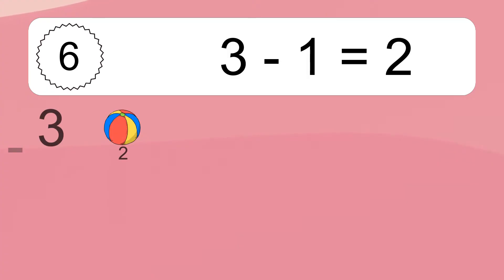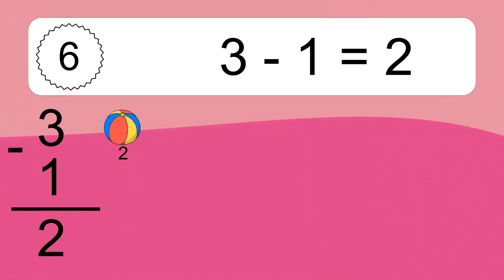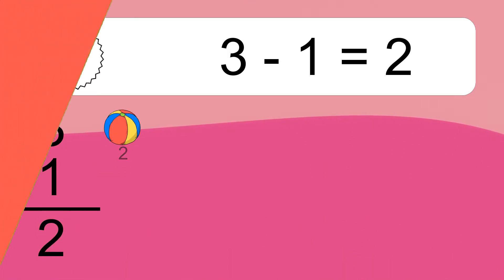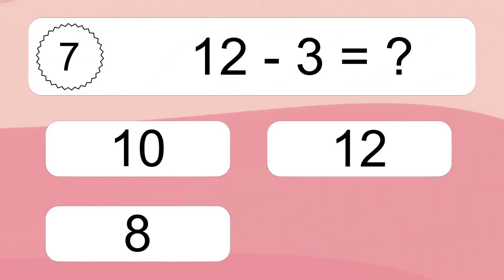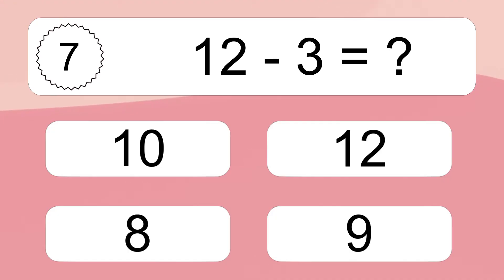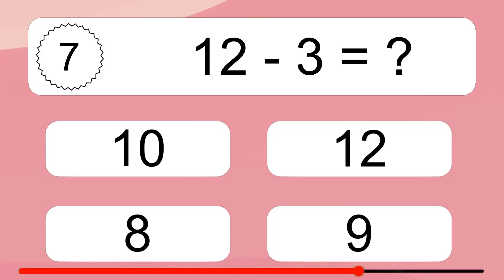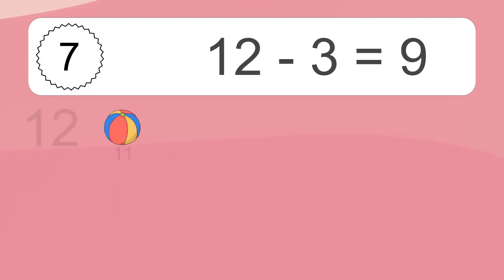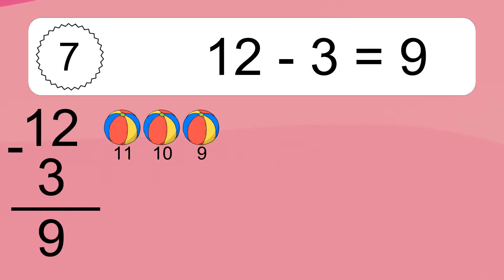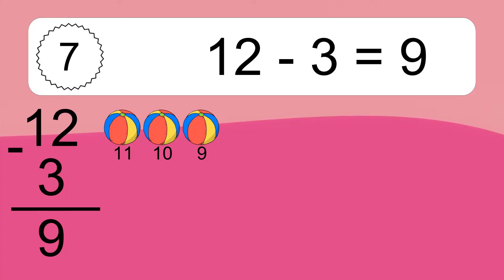3 minus 1 equals what? 3 minus 1 equals 2. Let's count it. 12 minus 3 equals what? 12 minus 3 equals 9. Let's count it: 11, 10, 9.